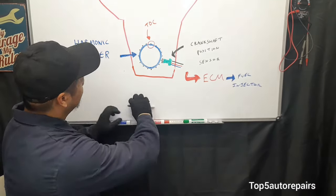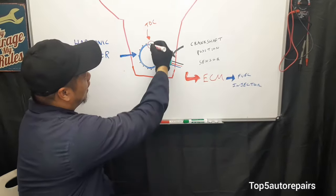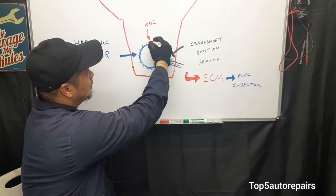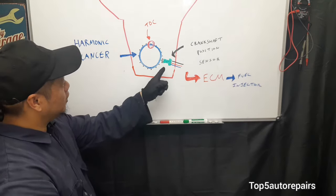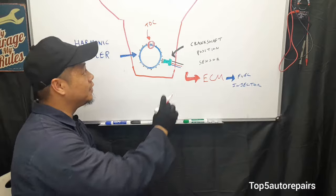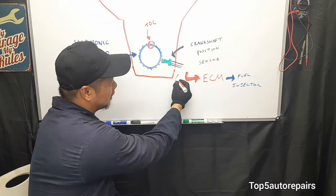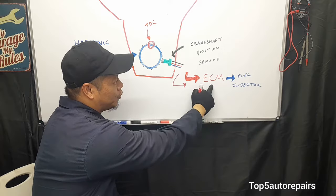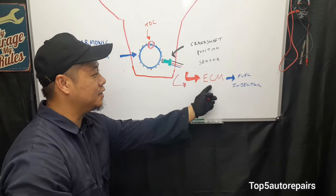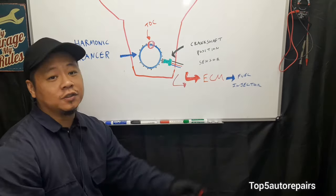Every time it reaches the top end position, it sends a signal to the crankshaft position sensor that everything is at top dead center. When everything is at top dead center, the signal gets sent to the computer, basically the ECM. The ECM tells the fuel injector to fire.